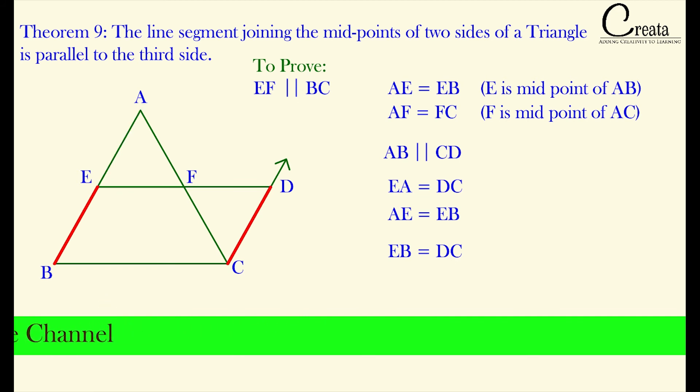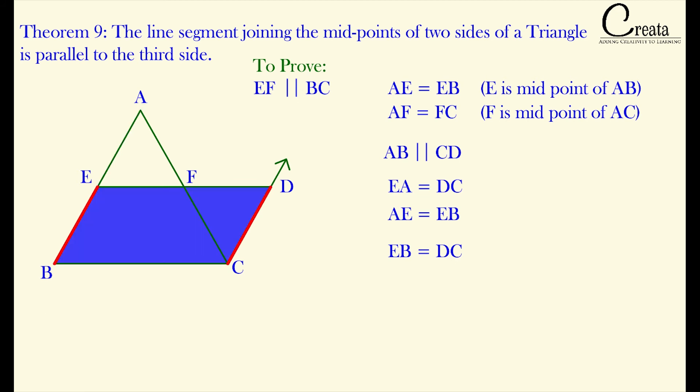Further, are you able to observe the quadrilateral EBCD? This is the quadrilateral. And we have proved EB is equal to DC. And EB is also parallel to DC. We have assumed this line segment as parallel to AB. So both of these line segments that is BE and DC are parallel as well as equal to each other.